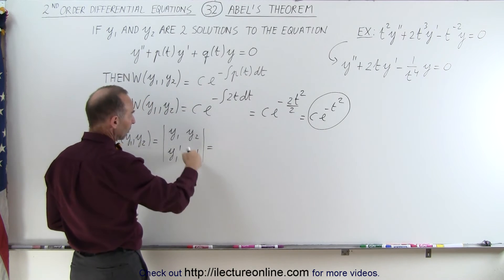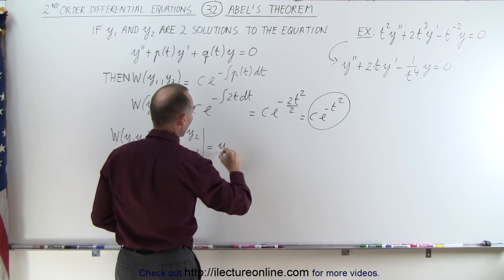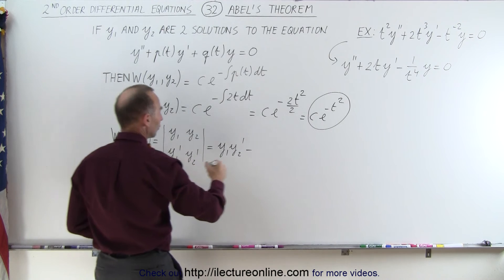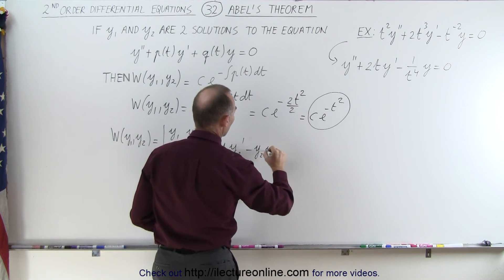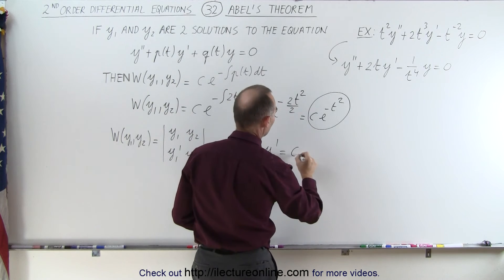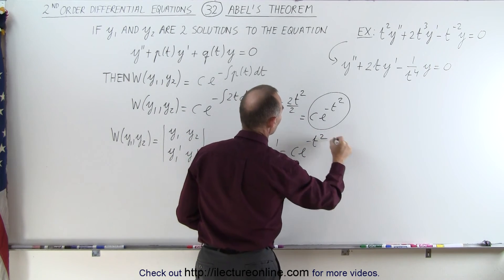This is equal to the product of these two, which is y1 y2 prime minus the product of these two, which is y2 y1 prime, and that has to equal c e to the minus t squared.